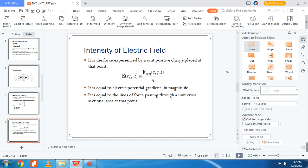Then, electric field intensity. It is the force experienced by a unit positive charge placed at that point. E of X, Y, Z equals F on Q X, Y, Z divided by q. It is equal to the electric potential gradient in magnitude. It is equal to the line of force passing through a unit cross-sectional area at that point.